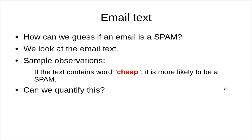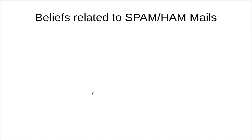For us humans, we just look at the email text and we can make a few simple observations. Like if we see a word like 'cheap' or 'extremely cheap' or something that looks like an advertisement, we think it is a spam. Can we quantify this? We want to write a program that classifies emails into spam mail and ham mails.